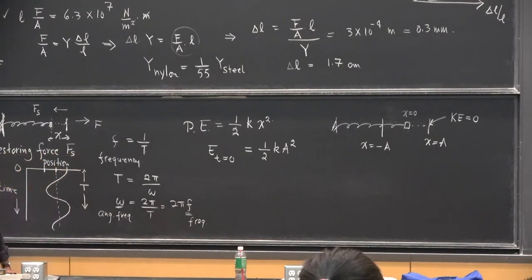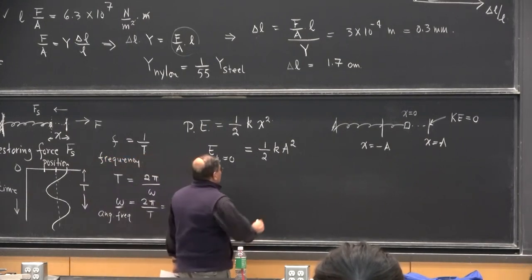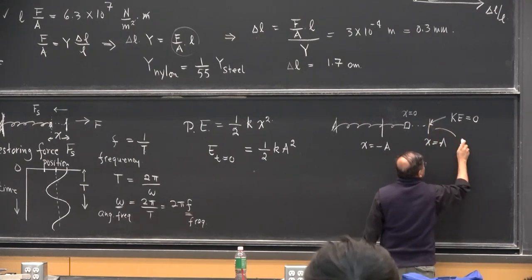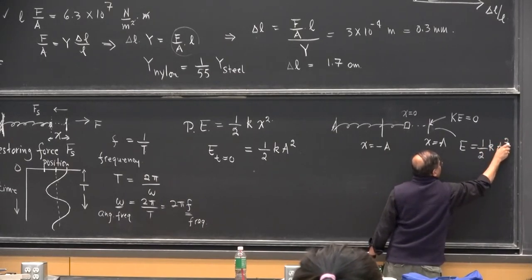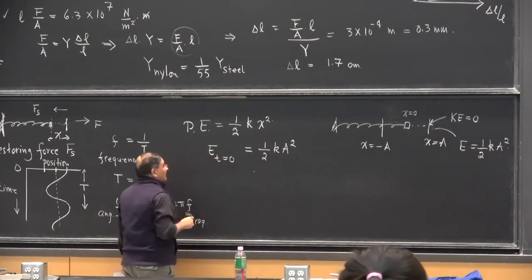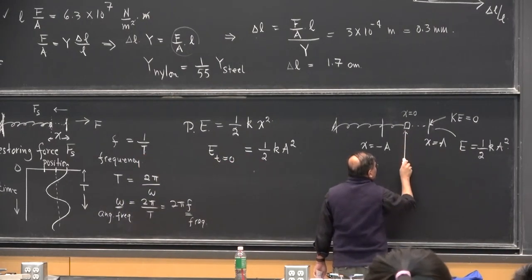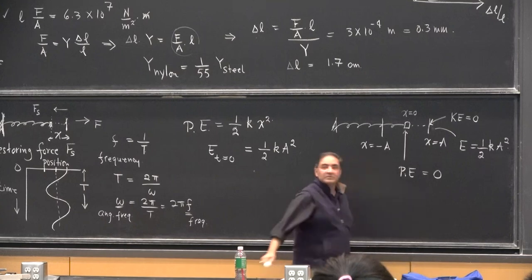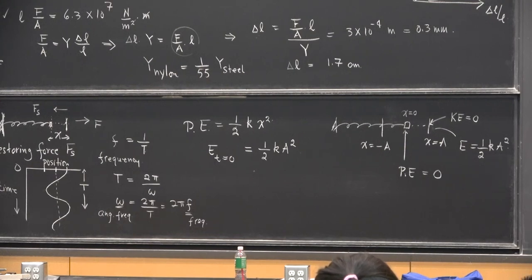Students lose points right and left when they start asking about this, so make sure you understand it. The total energy at the stretched position is ½kA², and kinetic energy is 0 because there is no motion. At the center position O, something interesting happens — potential energy, which is ½kx², is 0 because x is zero. So it has no potential energy, which means by energy conservation, at the middle, all energy is kinetic.